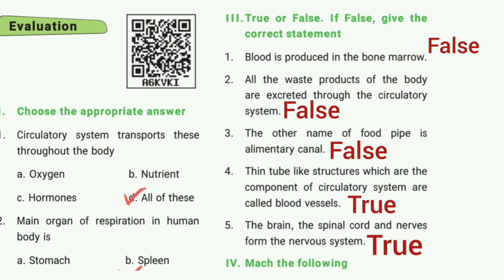Then fourth one: tube-like structures which are the components of the circulatory system are called blood vessels. The answer is true. Then fifth one: the brain, the spinal cord, and nerves form the nervous system. The answer is true.